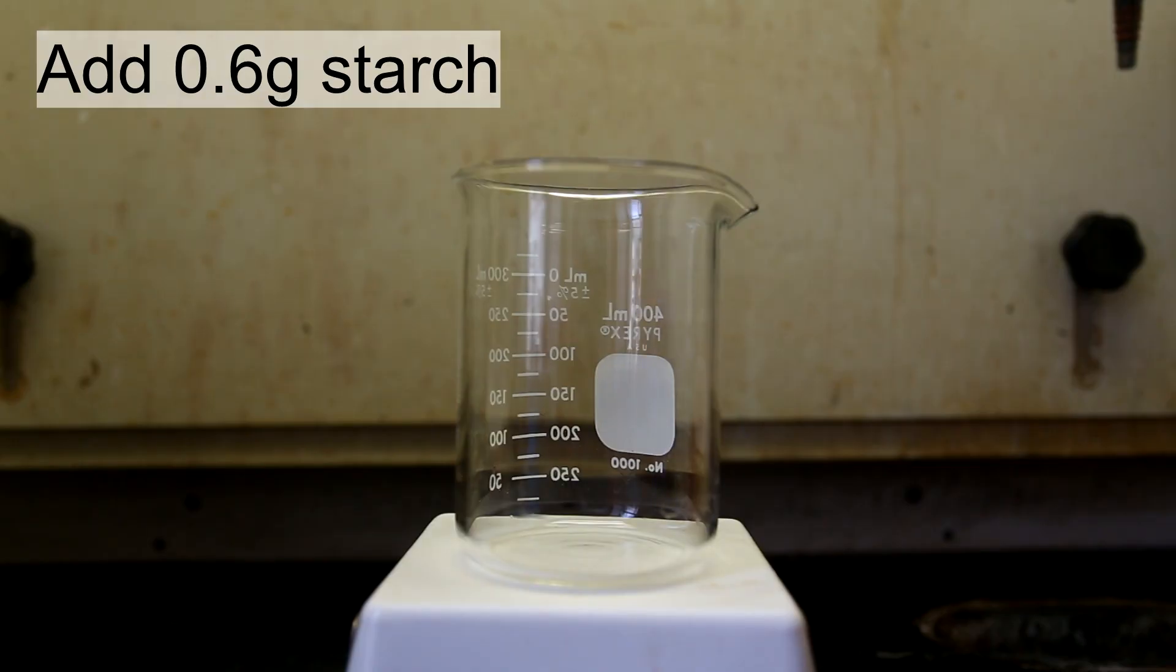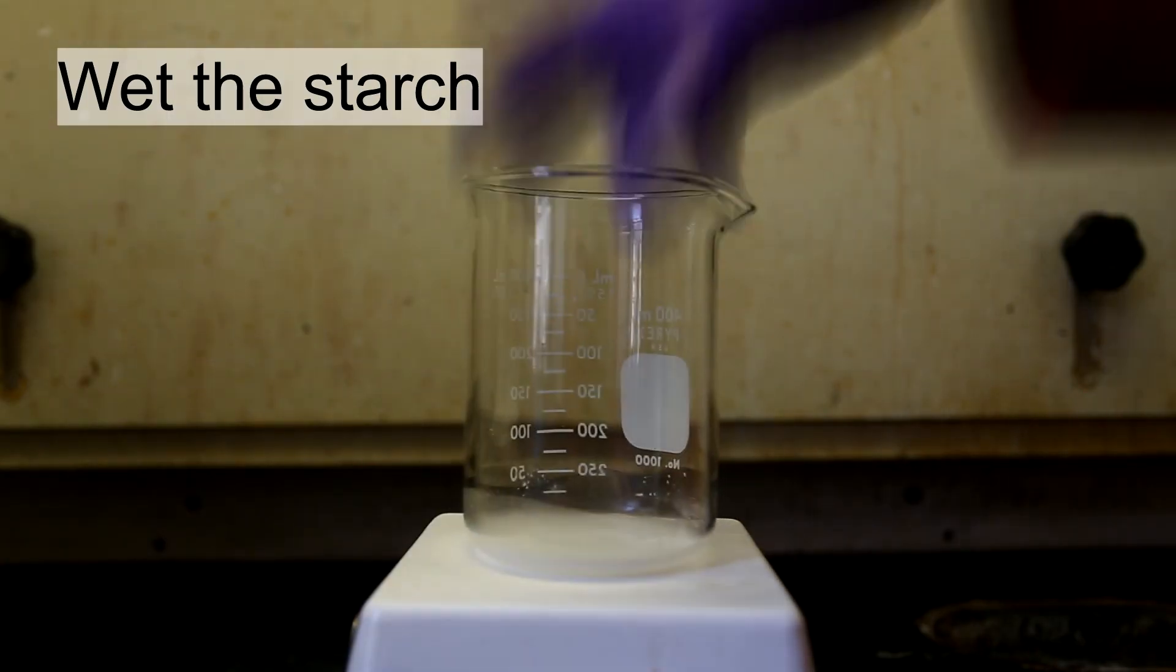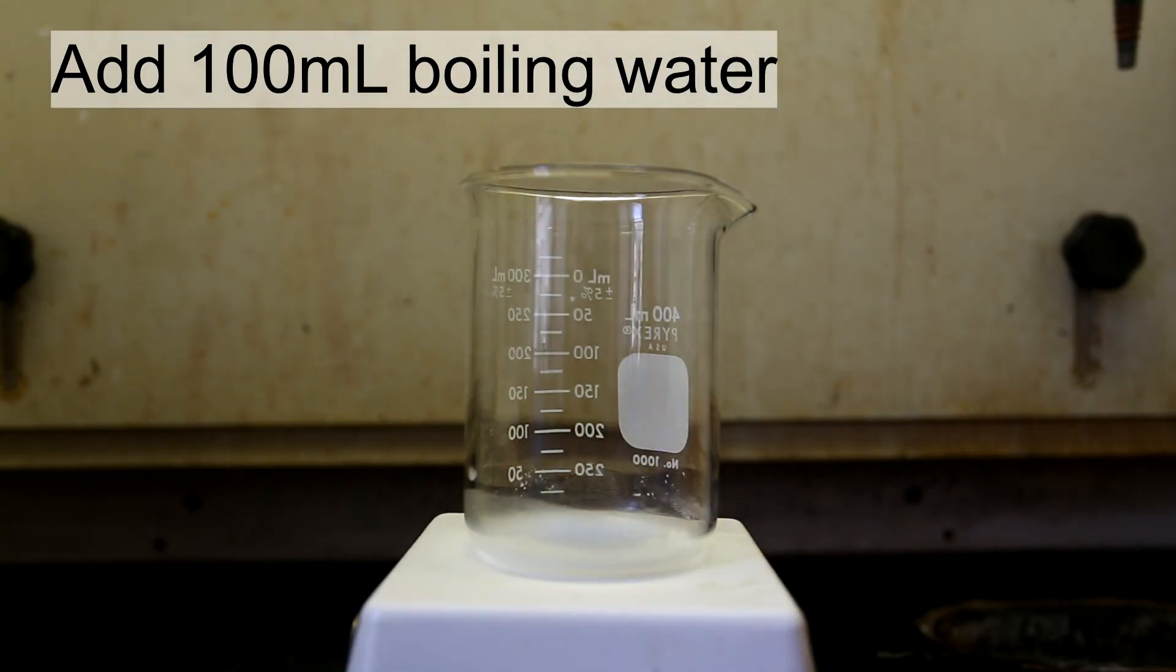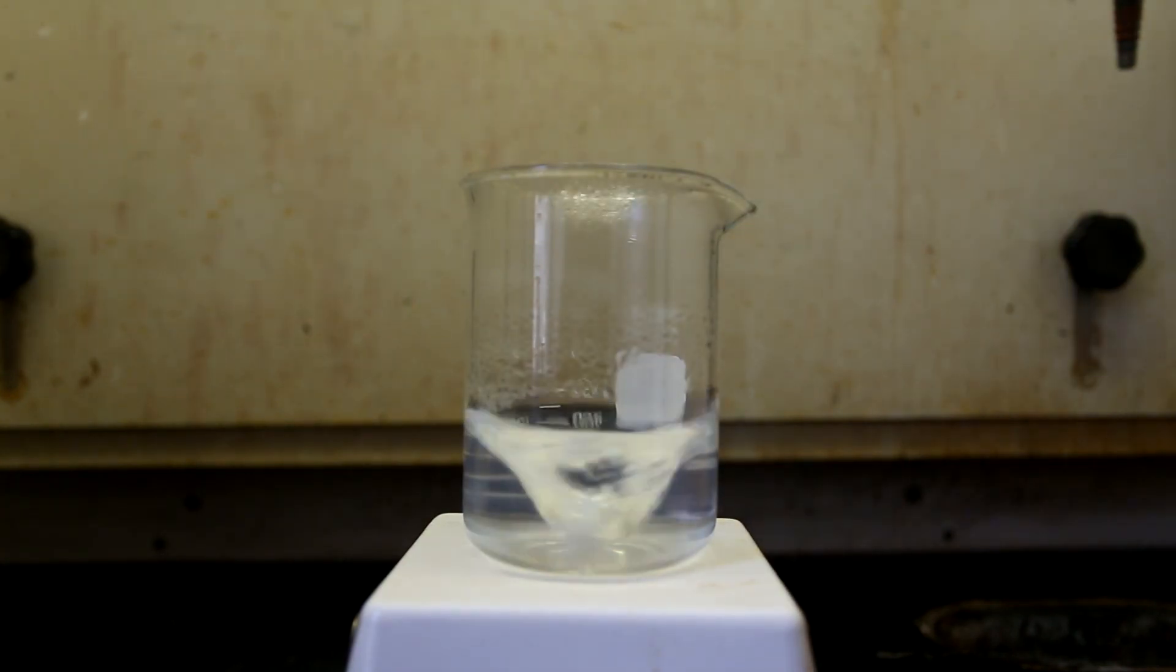I will first make Solution A. Next, add 0.6 grams of starch to an empty container, followed by several drops of cold water to wet all the starch. Pour 100 milliliters of boiling water onto the wetted starch. Stir the solution until it becomes completely clear.